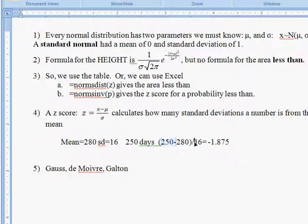The 1.875 tells us that this number of days is almost but not quite two standard deviations, two of these 16s times earlier than the mean. So almost two standard deviations less than the mean.